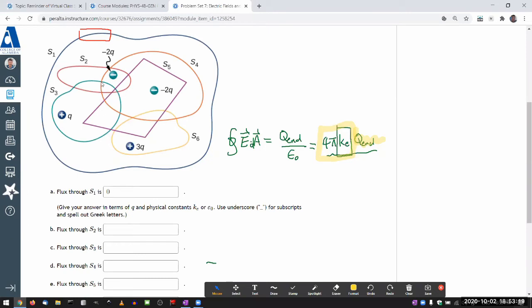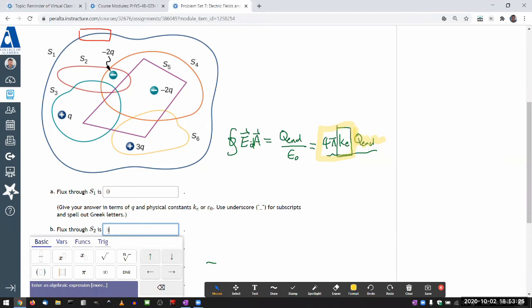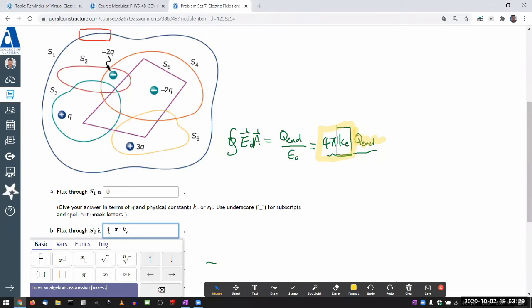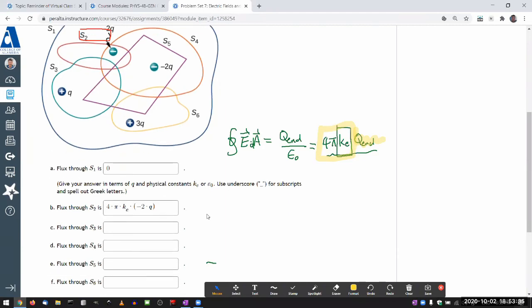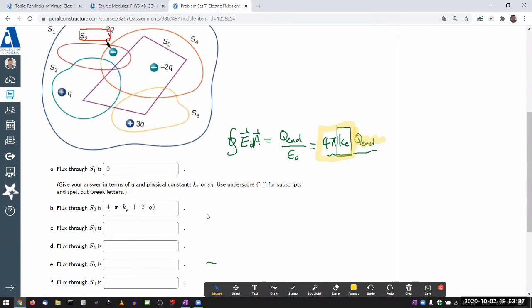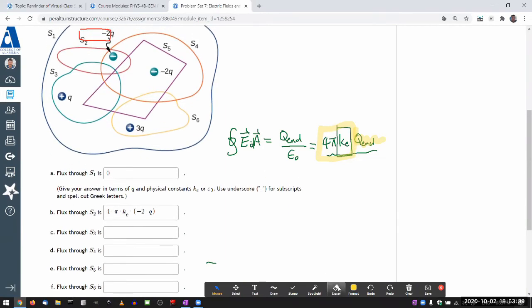Flux through S2—looking at it, it just encloses that -2Q. So that ought to be 4π times the Coulomb constant times -2Q. I can simplify, but I think it's fine. The system will handle it.